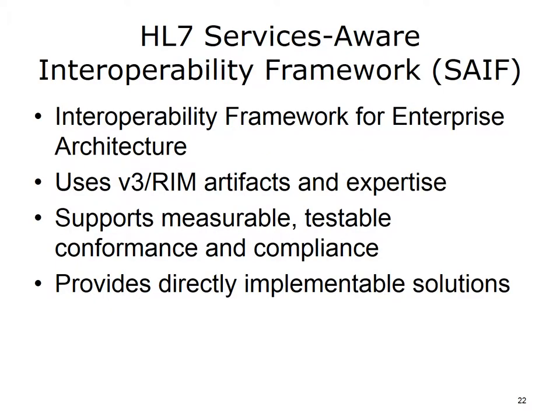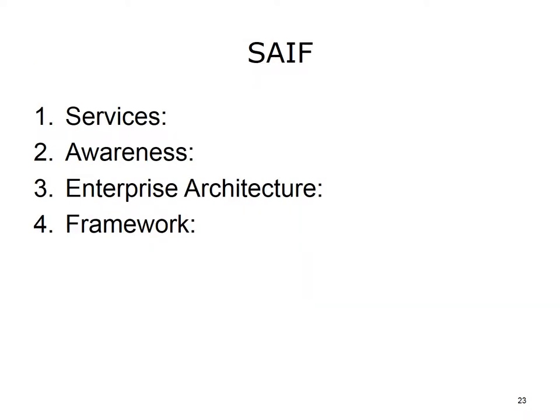HL7 created a framework for interoperability for EA called HL7 Services Aware Interoperability Framework, or SAIF. It uses version 3 RIM artifacts and expertise, supports measurable, testable conformance and compliance, and provides directly implementable solutions. SAIF has four defined areas: Services — about enabling HL7 standards; Awareness — about making standards aware of both services and an enterprise architecture; Enterprise Architecture — when adopted and embedded in development methodologies, SAIF becomes the enterprise architecture; and Framework — a framework in which standards are placed so we can see how they relate to each other, to other standards, and how they become part of users' integration architectures.